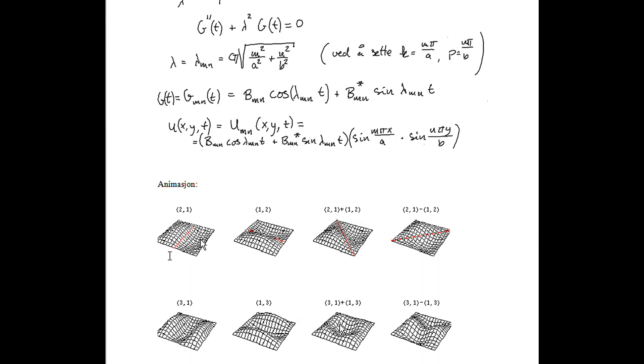These eigenfunctions are possible to describe. And, here you see the case when m is equal to 2, and n equal to 1. So, this is just a situation for a given T. And, we see that this is the node points. All points on the red line are not moving. The only points which are not moving in the rectangle.